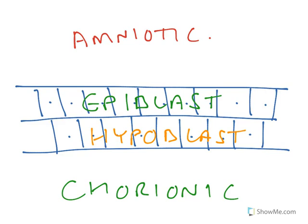With just these two cell layers, we're not capable of forming all of the body tissues — we actually need to form a third layer. That third layer forms in a rather interesting way. Cells of the epiblast migrate inwards and then back on themselves. It's a bit like making a sandwich: if the epiblast and hypoblast are two layers of bread, this process is putting the jam filling in between. This process of epiblast cells forcing their way between the two layers is called gastrulation.